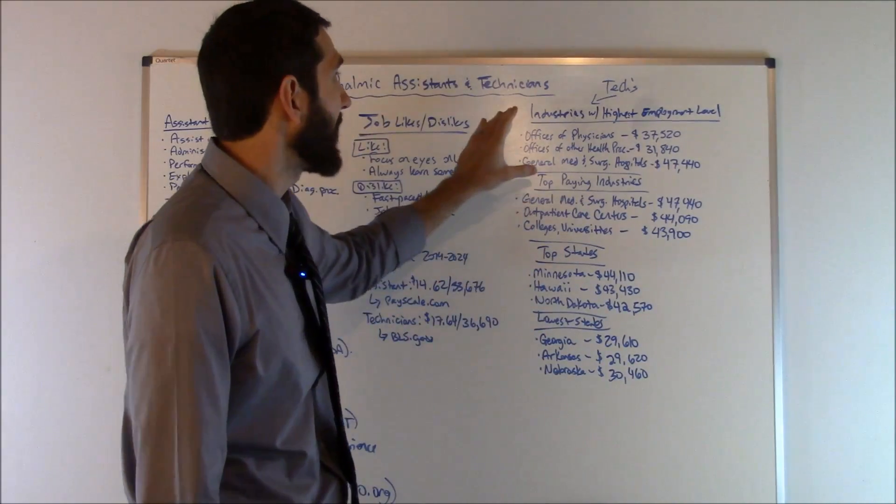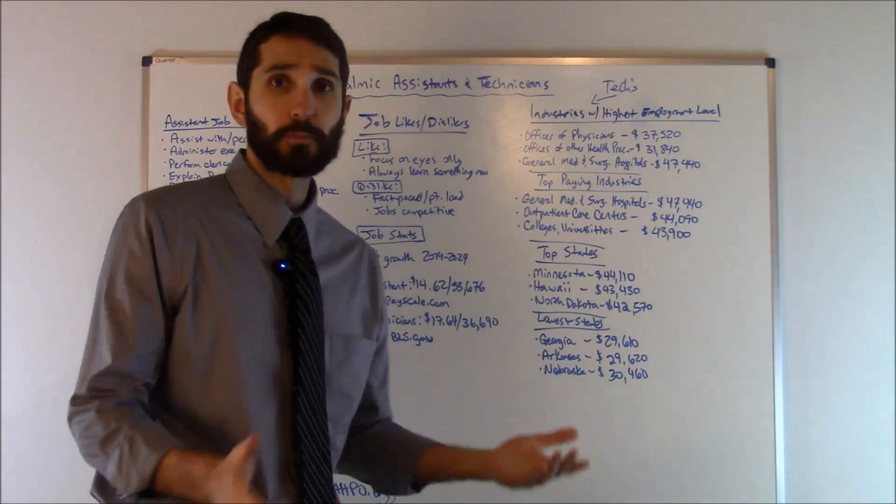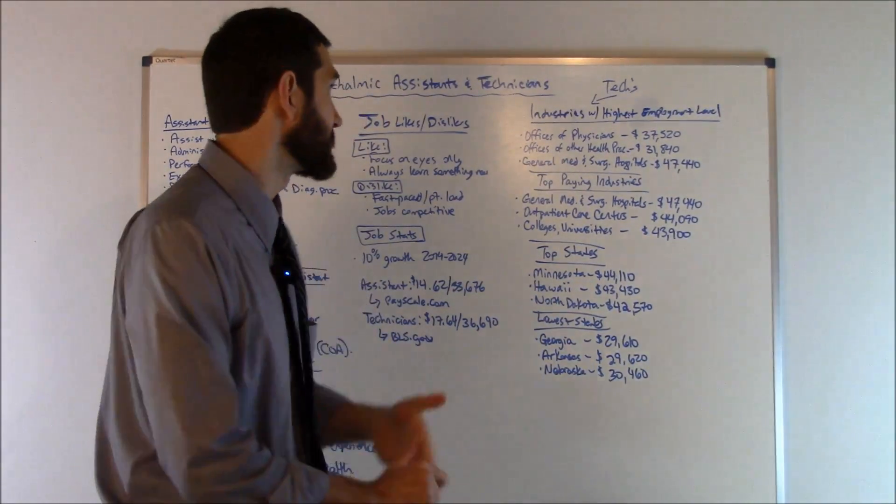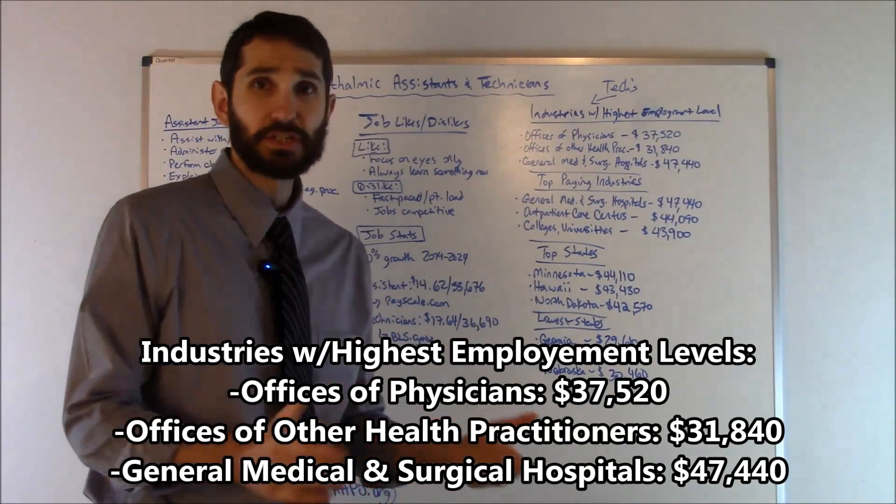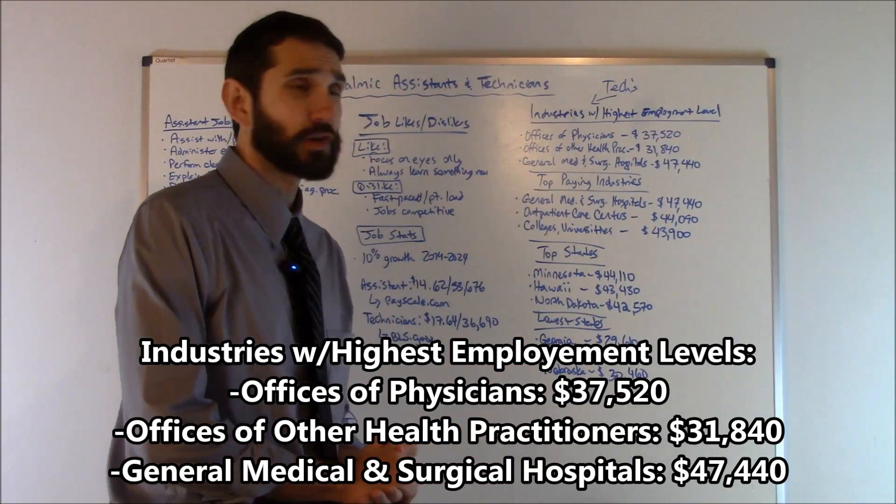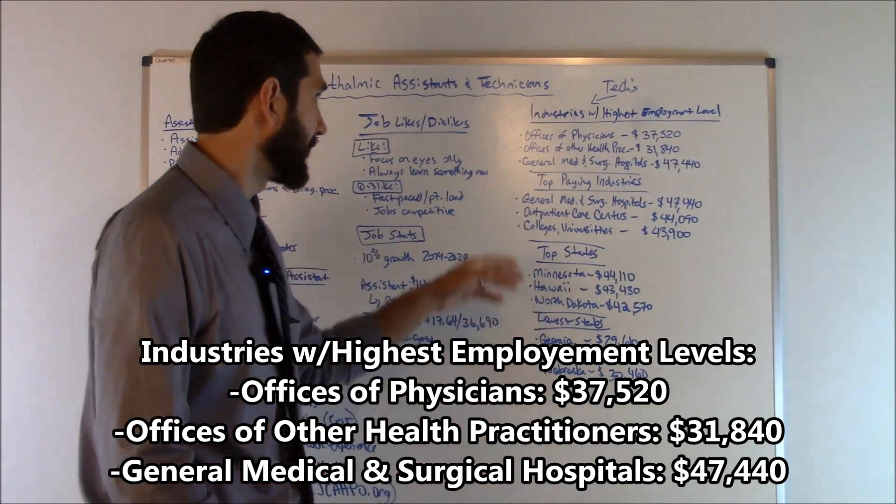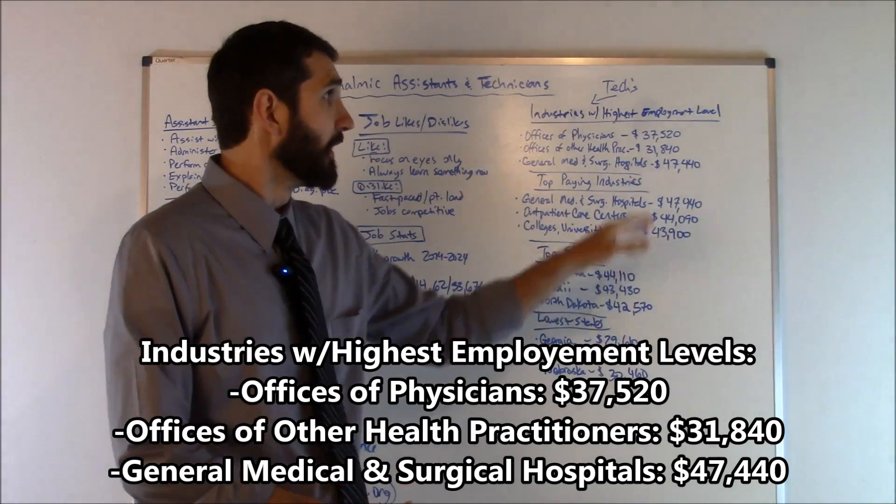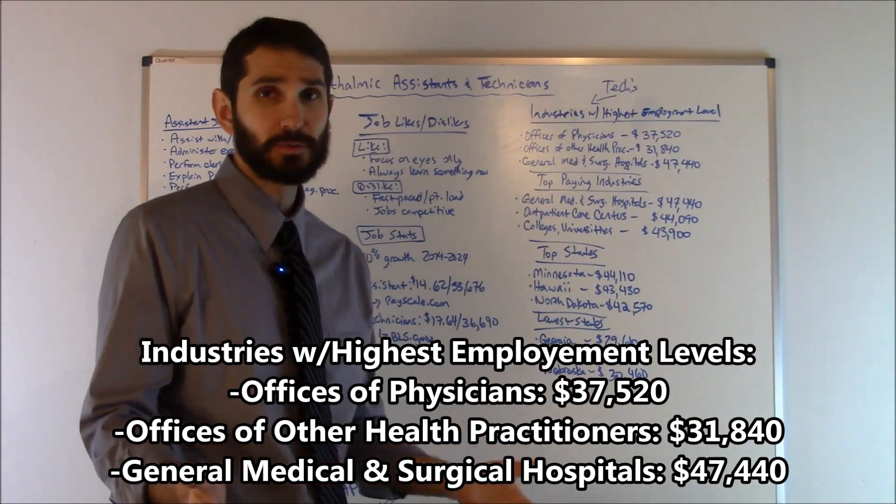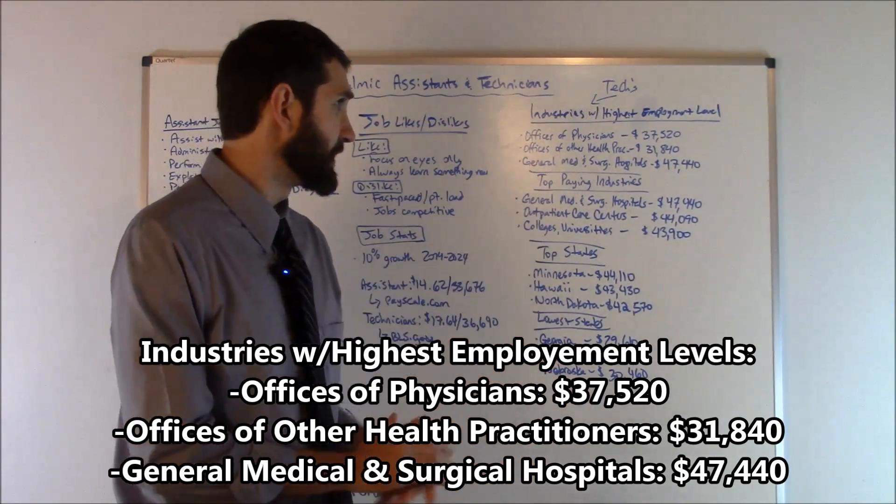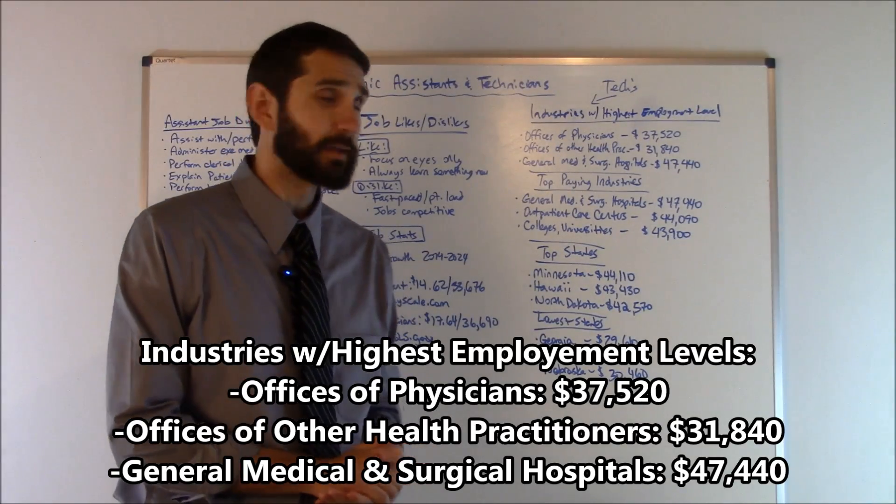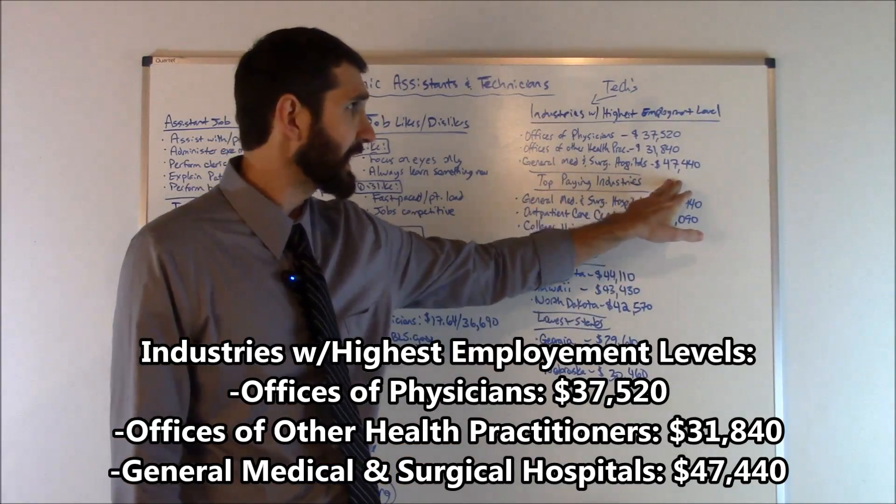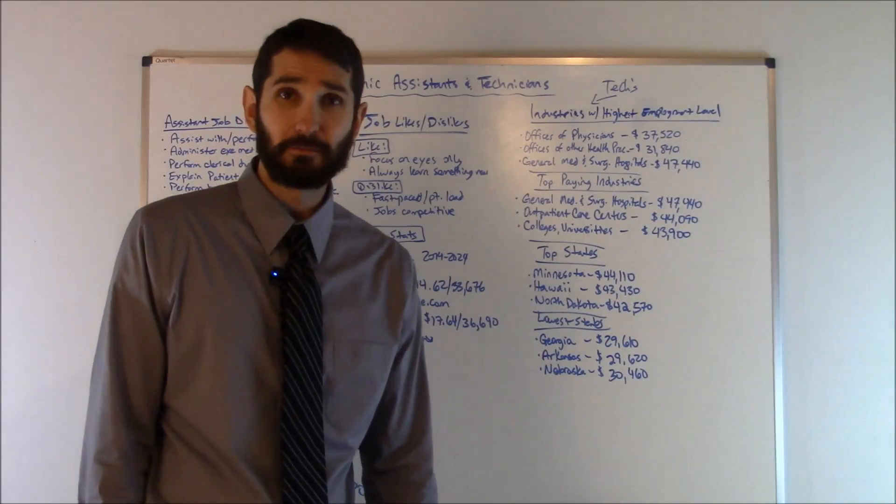Now, let's talk about the industries with the highest employment level for ophthalmic technicians. First, offices of physicians came in at number one, $37,520 was the average salary. Offices of other health practitioners came in at number two, $31,840 was the average. And then general medical and surgical hospitals came in at number three, average salary $47,440.